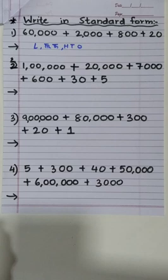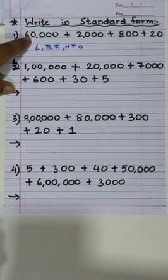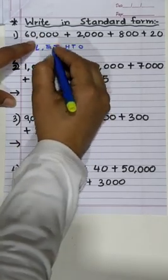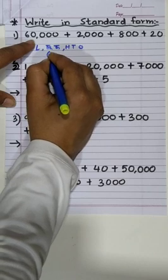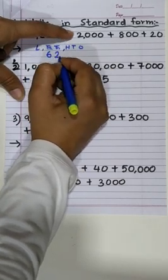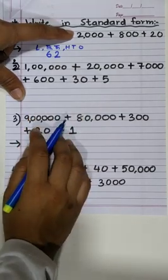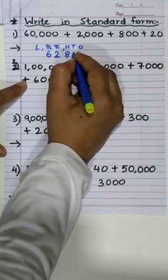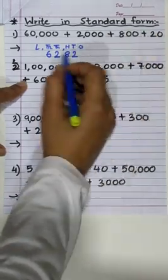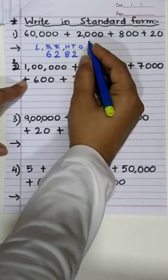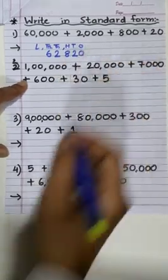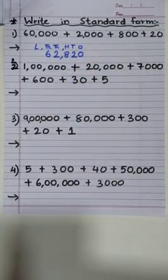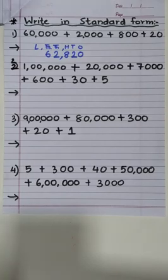Now let's start writing the number. We have the first number is 60,000, so under 10,000s we'll write 6. Then 2 under the thousands as the next number is 2,000. Under hundreds we'll write 8. Under tens we'll write 2. As we have nothing to write under ones, we'll write a 0. So the number which we got is 62,820. Easy?